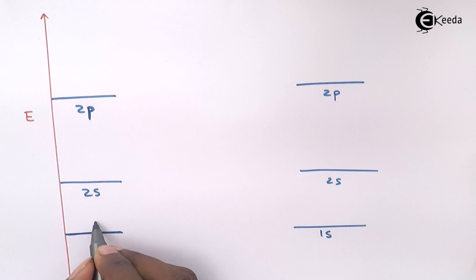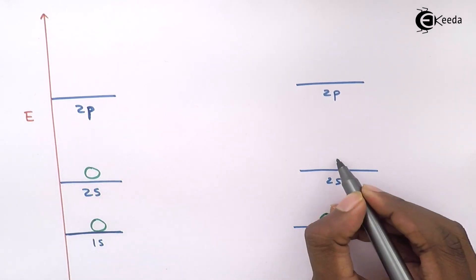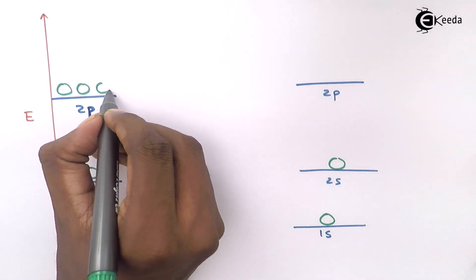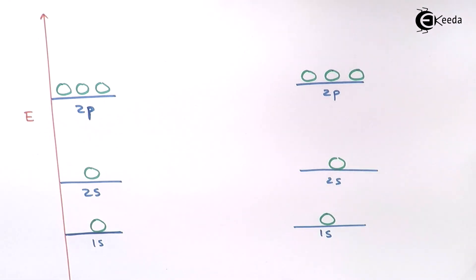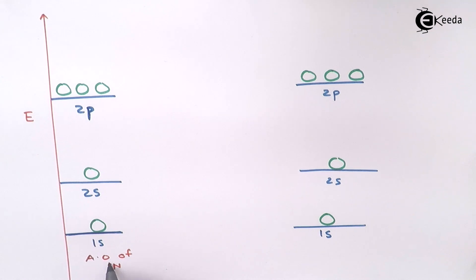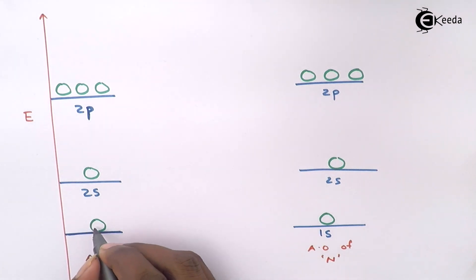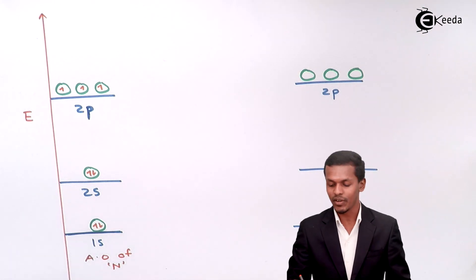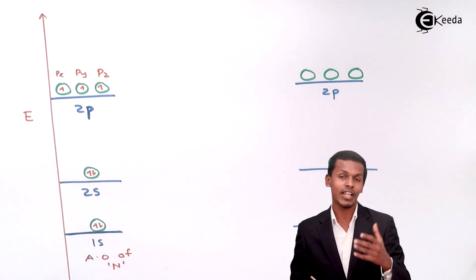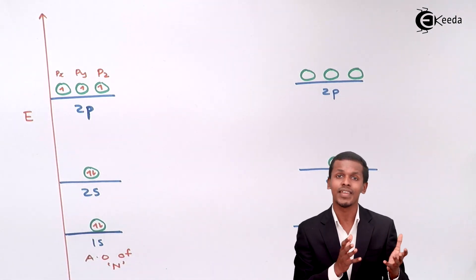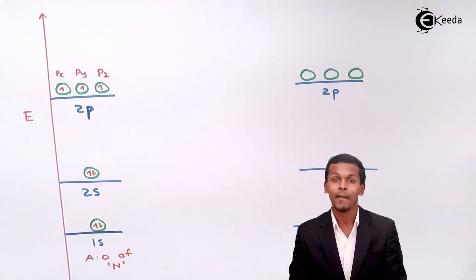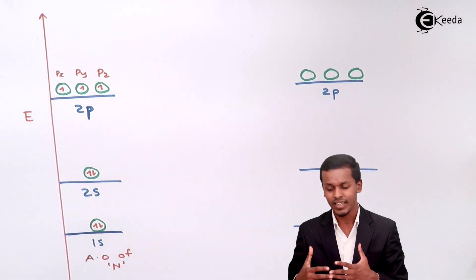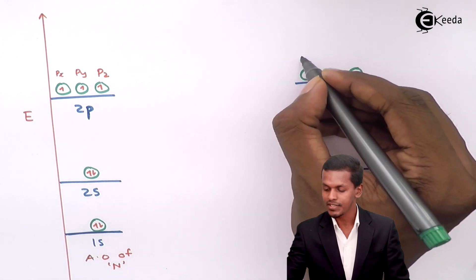Now let us fill the orbitals. I am representing one orbital for each: 2px, 2py, 2pz on one side, and 2px, 2py, 2pz on the other side for the second nitrogen atom. Now let us represent the electrons. For the first nitrogen atom there are 2 electrons in 1s, 2 electrons in 2s, and 1, 2, 3 electrons in the p subshell — one each for px, py and pz. The designation is very important because it tells us which orbital is responsible for giving a sigma bond or a pi bond.